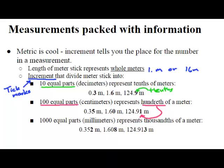Finally, if we round out the set, if we have 1,000 equal parts, also known as millimeters, that represents one thousandth of a meter. We get to add another decimal. That's in the tenths, hundredths, thousandths place. For example, 0.352 meters, or 1.608 meters, or 124.913 meters.